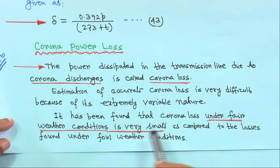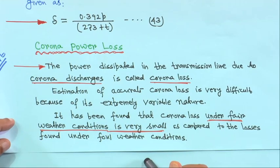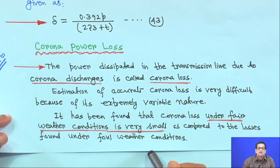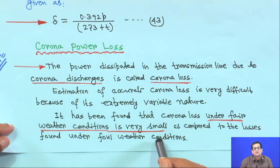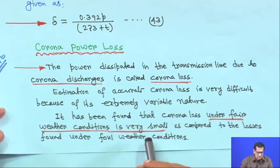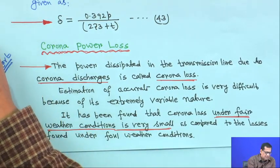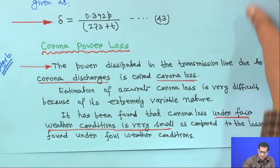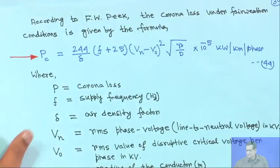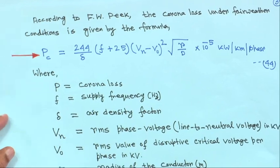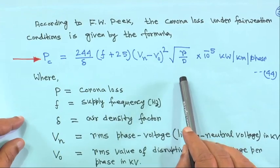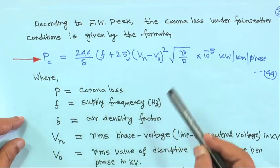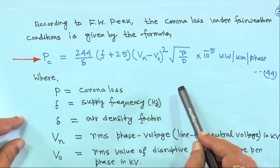Under fair weather conditions, corona will be very small, but under foul weather conditions corona will be very high — as high as 10 times the corona loss of fair weather conditions. That is why there is no exact formula for corona loss, but some empirical formulas are available. Through experimental tests, people have found some approximate formulas.